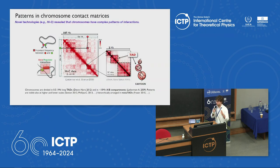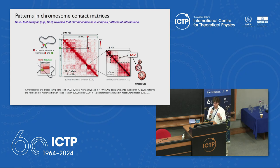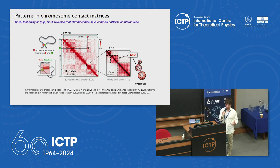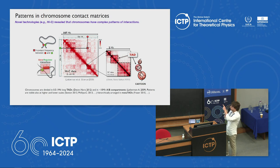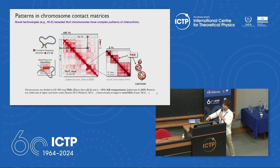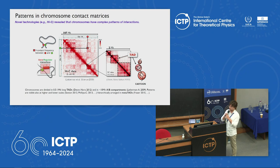Before talking about models and mechanisms, let's start from the experimental data now available on the structure of chromosomes. In the last 15 years there was a huge revolution in the field, because now we have quantitative data on the structure of the genome. There are many techniques; I'm focusing on Hi-C, but there are many others. What you see in the middle of the slide is the average contact matrix of an entire human chromosome.